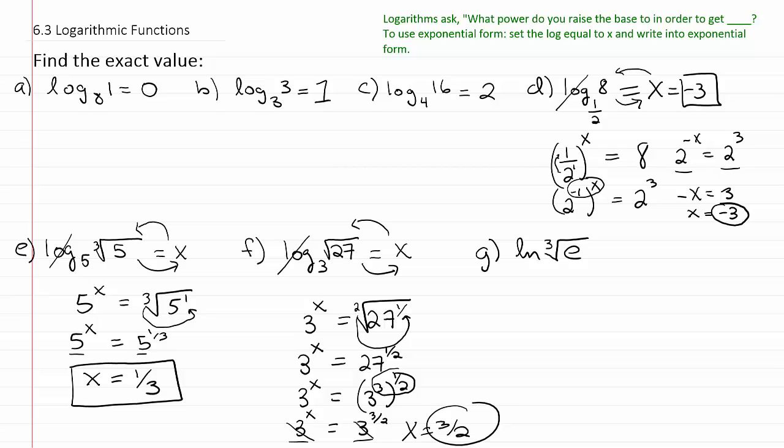All right. And last but not least, we have g. To solve g, we basically, again, do the same thing. But we might want to rewrite ln as what? Log base e. And if we do that, then we'll have log base e of the 3rd root of e is equal to x. And then we would drop the log and switch these two positions.